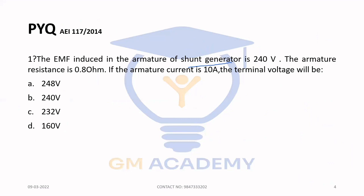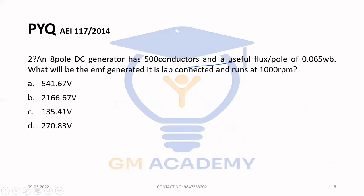Next question. An 8-pole DC generator has 500 conductors and a useful flux per pole of 0.065 Wb. What will be the EMF generated? It is lap connected and runs at 1000 RPM. Mark the given data.